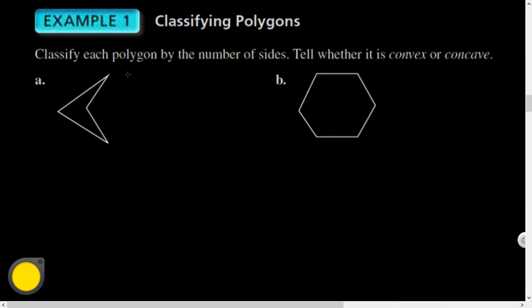So here we go, classifying the polygon. Classify each polygon by the number of sides and tell whether it is convex or concave. For this polygon here, I've got one, two, three, four sides. So this is a quadrilateral. And it appears to have this dented region right here, so this is concave. And over here, notice this is not a regular shape. Let's count these sides: one, two, three, four, five, six. So this is a hexagon based on the number of sides. And this has no dents in it, so it is convex.